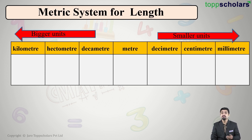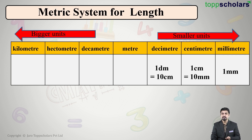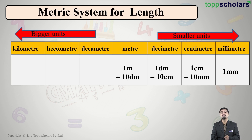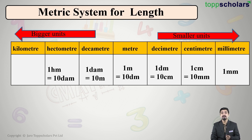You all know where we use kilometers — whenever we say we traveled so many kilometers, it is a very big unit. Now let us understand the relation between adjacent units. One centimeter is equal to 10 millimeters. One decimeter is equal to 10 centimeters. One meter is equal to 10 decimeters.